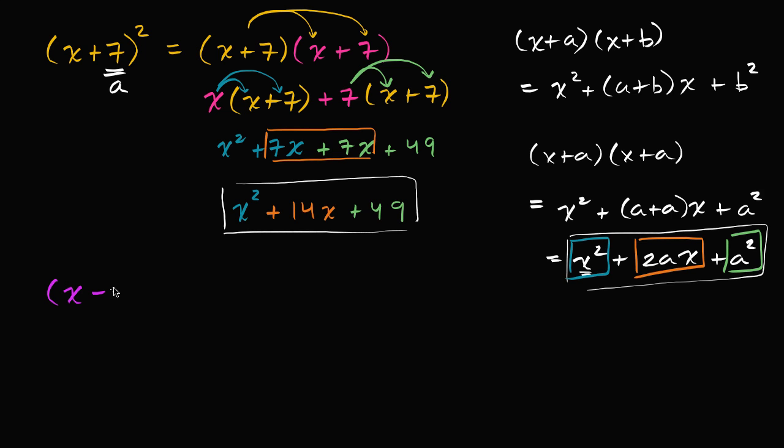What is (x - 3)²? I encourage you to pause the video and think about it, expressing this using this pattern. Well, in this case our a is negative 3. We have to be careful—that is our a right there.